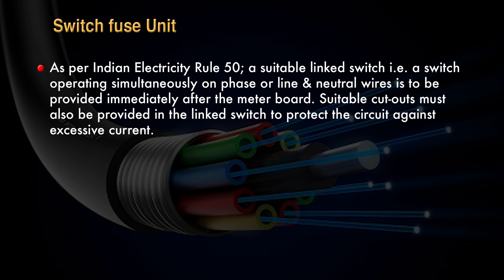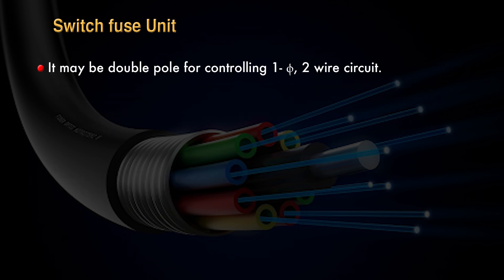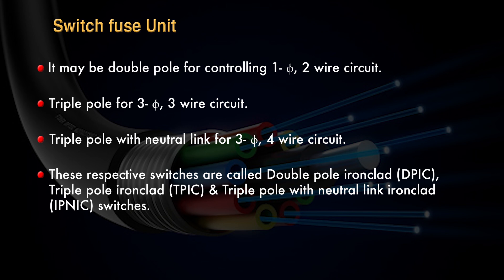As per Indian Electricity Rule 50, a suitable linked switch — operating simultaneously on phase or line and neutral wire — must be provided immediately after the meter board. A suitable cutout must also be provided to protect against excessive current. The combined linked switch and fuse unit is called a Switch Fuse Unit, also known as an Iron Clad Switch. It may be double pole (DPIC) for single phase 2-wire circuits, triple pole (TPIC) for 3-phase 3-wire circuits, or triple pole with neutral link (TPNIC) for 3-phase 4-wire circuits.